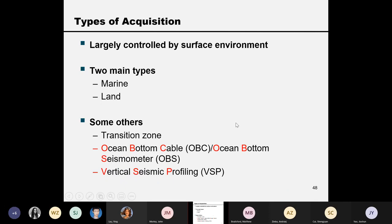Now let's talk about seismic acquisition. Acquisition types are largely controlled by the surface environment. For example, in the marine environment, we use pressure sensors because there is no shear modulus in water.